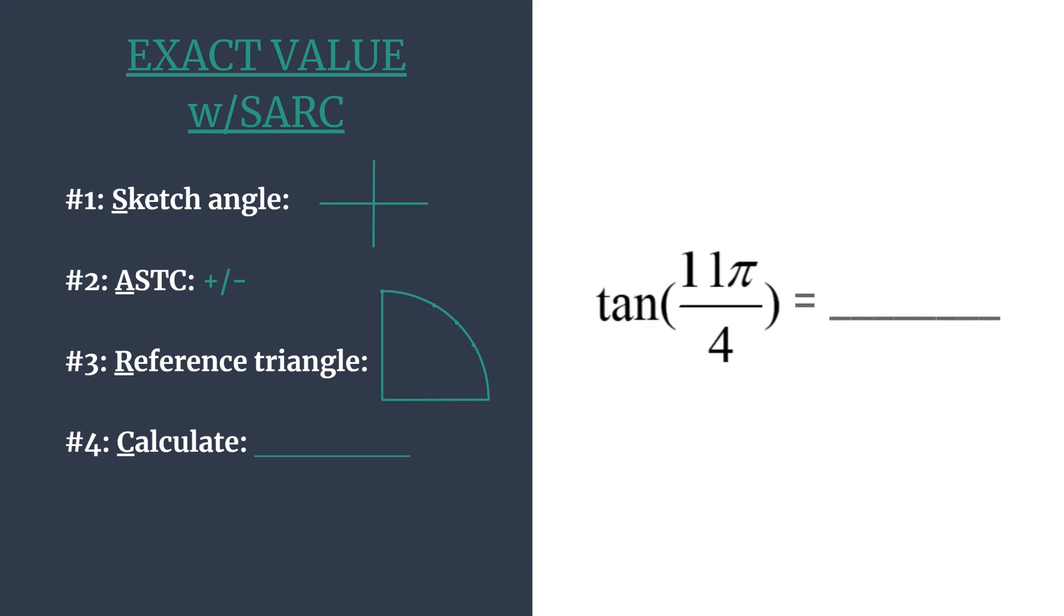Alright, so we're going to find the tangent of 11π over 4. So S, we start by sketching our angle's terminal side, and do notice that 11π over 4 is an angle that is created by more than one rotation around the unit circle. So we want to reduce that to a coterminal angle for ease of sketching.